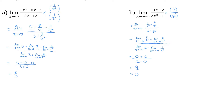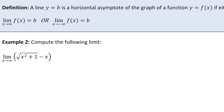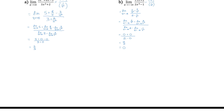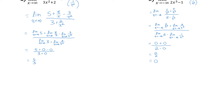It's actually a key property of these functions that we just found — we found where there is a horizontal asymptote for each of these functions. A line y equals b is a horizontal asymptote of the graph of a function if either the limit as x approaches infinity or negative infinity equals b. So there is a horizontal asymptote for the first function at y equals 5 thirds, and for the second at y equals 0.